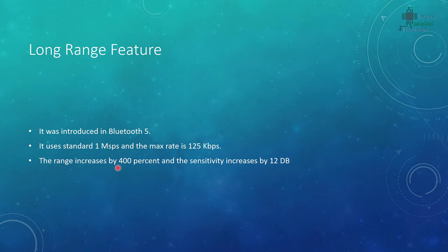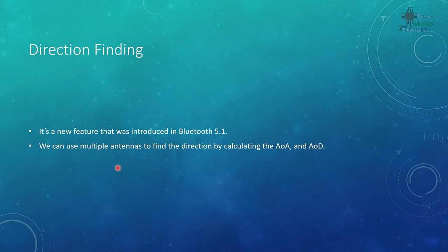Direction finding was introduced in Bluetooth 5.1 and uses multiple antennas to find direction by calculating AOA (angle of arrival) and AOD (angle of departure). This is useful for indoor navigation. The NRF52840 can implement this feature, and future tutorials will cover designing devices with multiple antennas for direction finding.